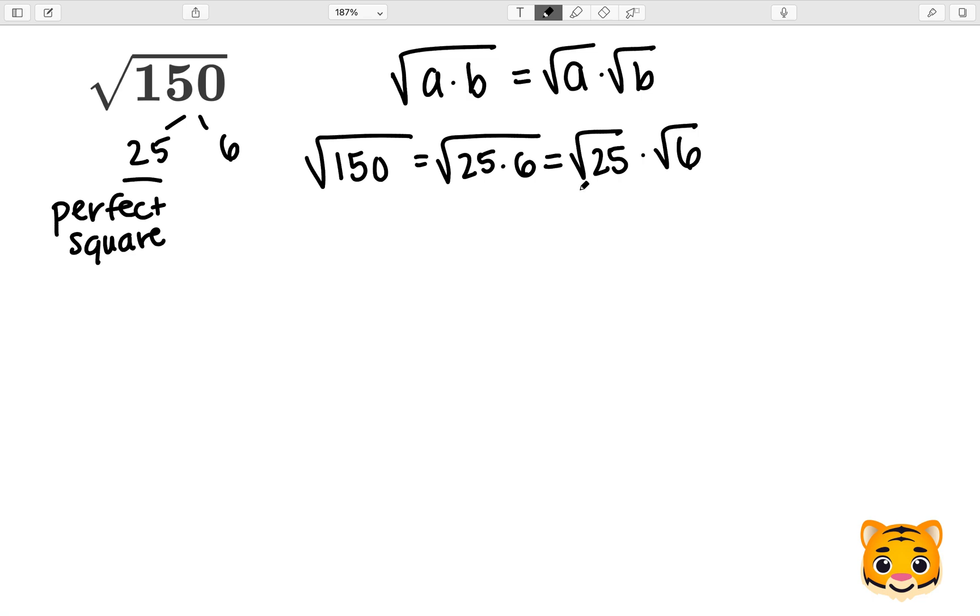Because 5 times 5 equals 25, we can rewrite the square root of 25 as just 5. And therefore, the square root of 150 is equal to 5 times the square root of 6, which is our simplified version.